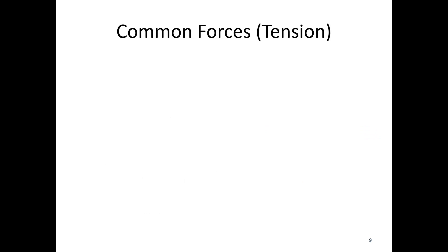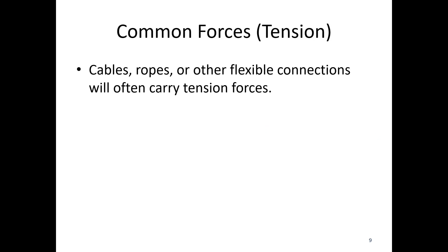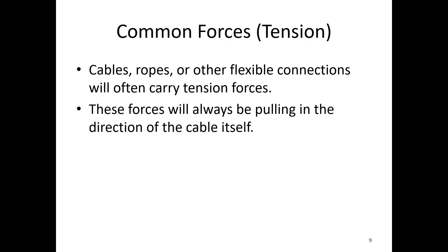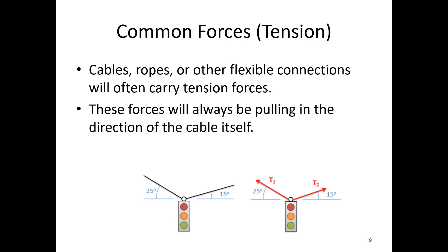Finally: tension. Cables, ropes, and other flexible connections carry tension forces, and these forces always pull in the direction of the cable itself. For example, the free body diagram of a stoplight replaces the cables with two tension forces — T1 and T2 — acting in the exact same direction as the cables. An important note: cables can only pull. You cannot push anything with a rope, so tension is always pulling.